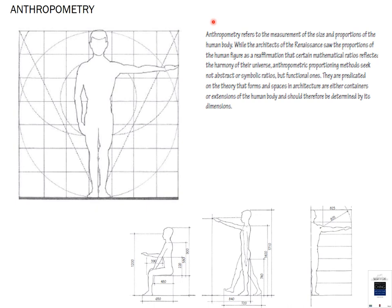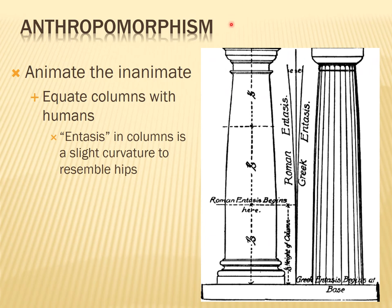Anthropometry refers to the measurement of the size and proportion of the human body. Renaissance architects saw proportion in the human figure as a reaffirmation that certain mathematical ratios reflected the harmony of the universe. Anthropomorphic proportioning methods seek functional ratios — predicated on the theory that forms and spaces in architecture are either containers or extensions of the human body and should be determined by its dimensions. An example of anthropomorphism is entasis — the subtle curves on Greek and Roman columns — used to animate the inanimate with a human-like form.